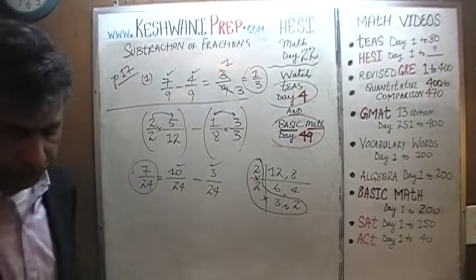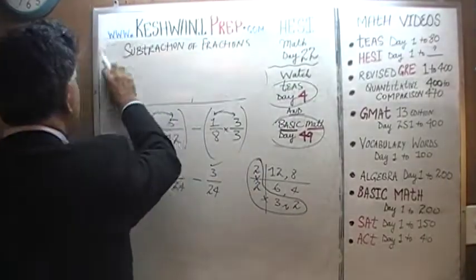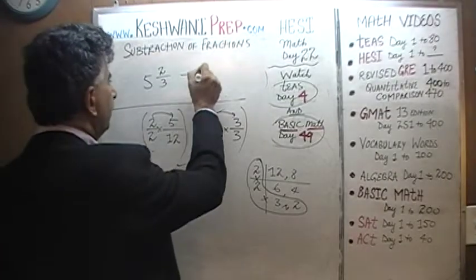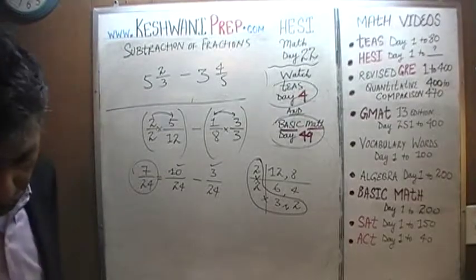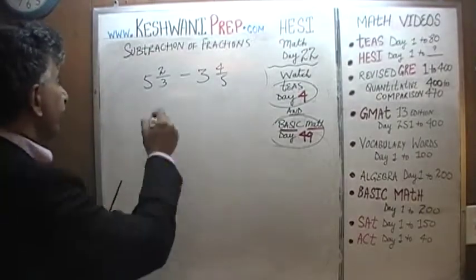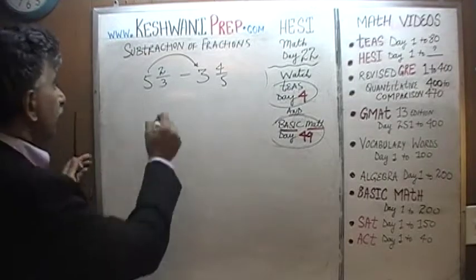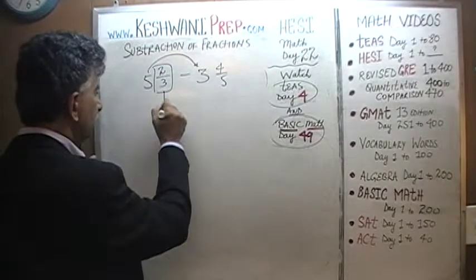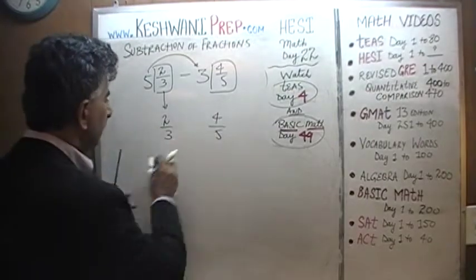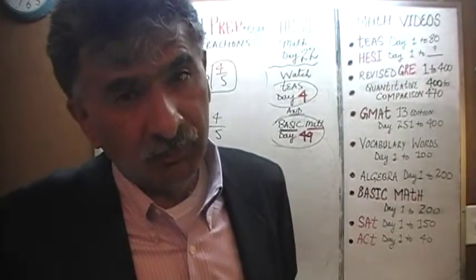Let's do one more — example number 3. It says 5 and 2 thirds minus 3 and 4 fifths. We could simply subtract 3 from 5 to get 2, but then we have to subtract the fractions: 2 thirds minus 4 fifths. As we can see, 2 thirds is less than 4 fifths — we cannot subtract 4 fifths from 2 thirds. So we are going to have to do some borrowing and manipulation.